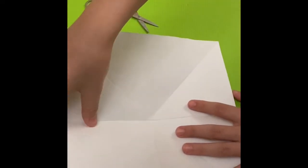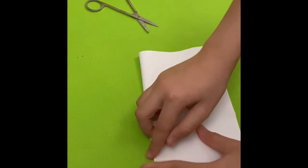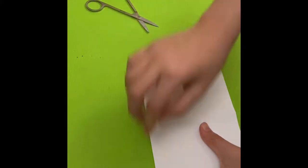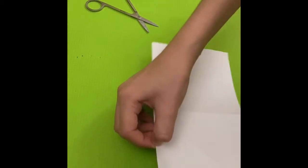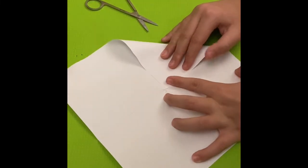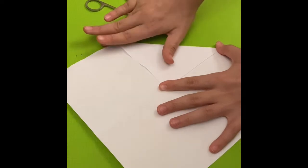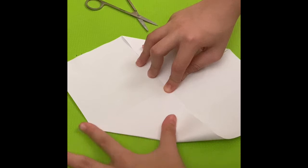After that you're gonna open it and fold it in the other way around at the half. Now you're gonna open it and you're gonna fold the corners, only two of them like this.